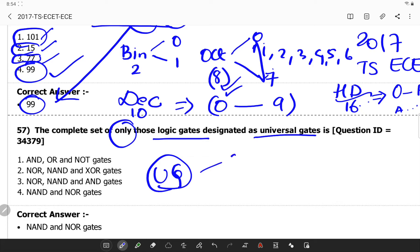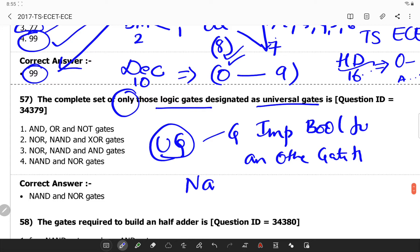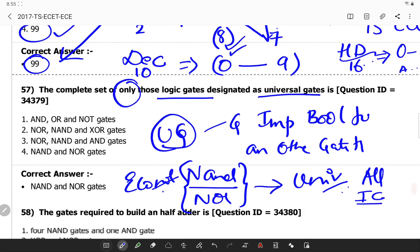Universal gate is a gate which can implement any boolean function without the need of any other gate type. So only NAND and NOR are the universal gates. Also remember these two gates are economical and are used in all ICs in digital logic families.